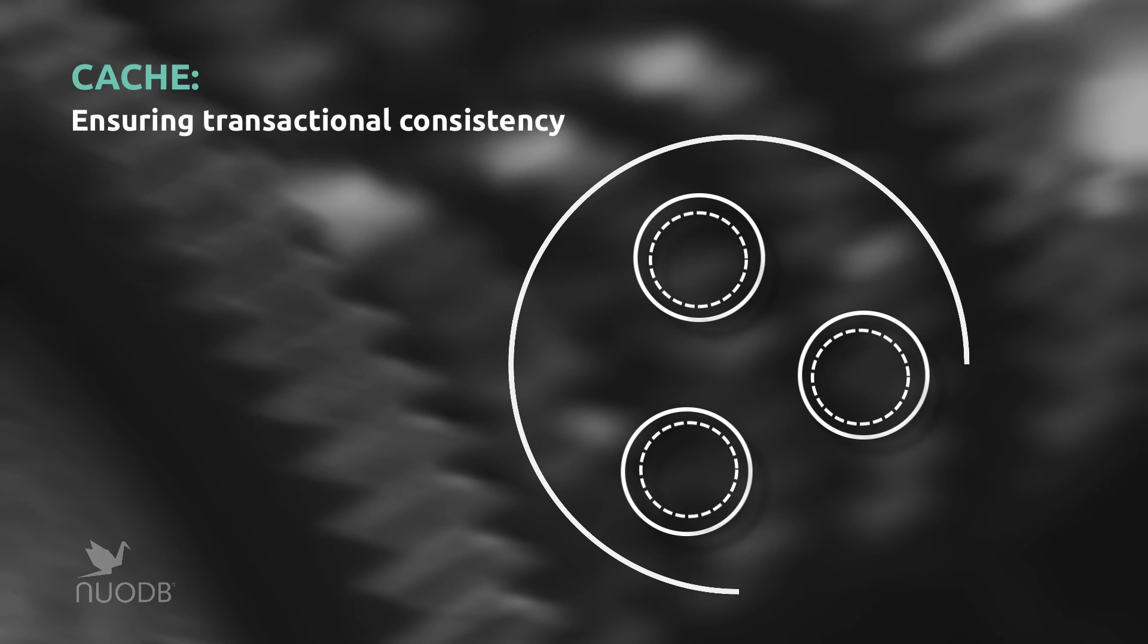You may be wondering how the system ensures consistency when the data is cached in multiple locations. Each peer knows the other locations of each data item stored in its own cache and can therefore drive coordination and cache consistency based on that knowledge.